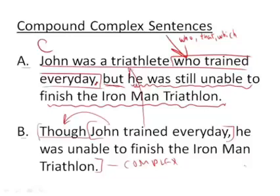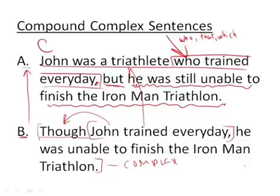The only information we lose in example B is that John is a triathlete. When you're writing, you want to vary your sentence structure. If you want to include that John is a triathlete in B but can't fit it in, you may want to write a sentence like A, where you can include it — but in doing so, you'll change it from a complex to a compound complex sentence. That's fine as long as you remember your punctuation and your coordinating conjunction.